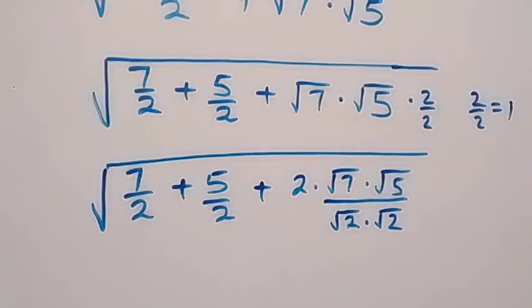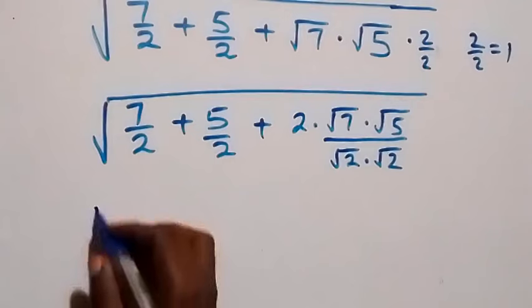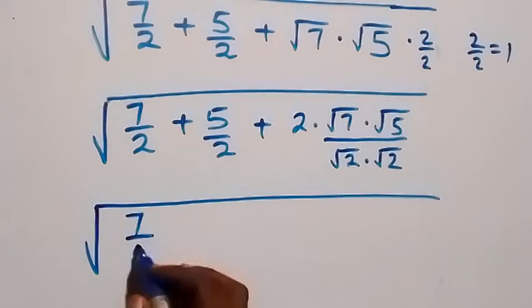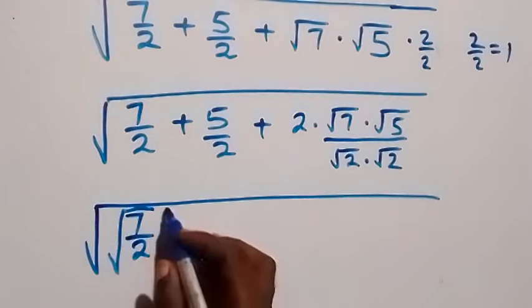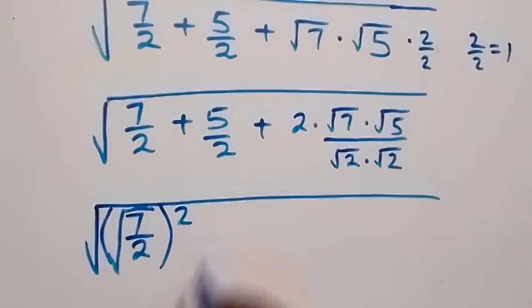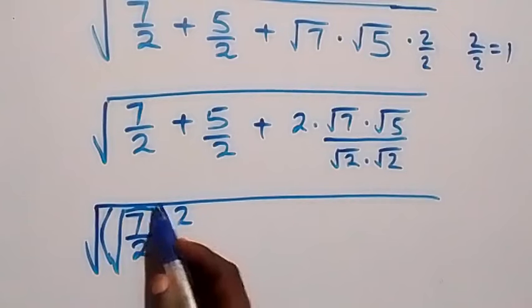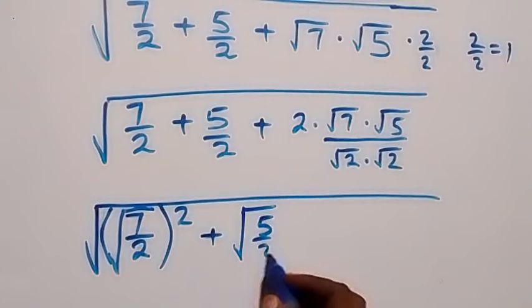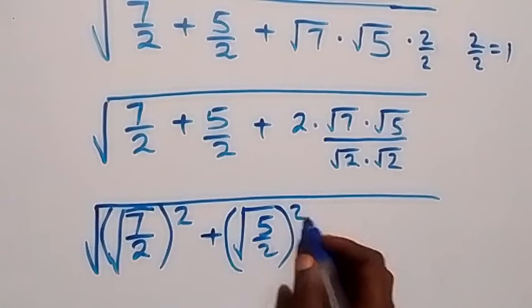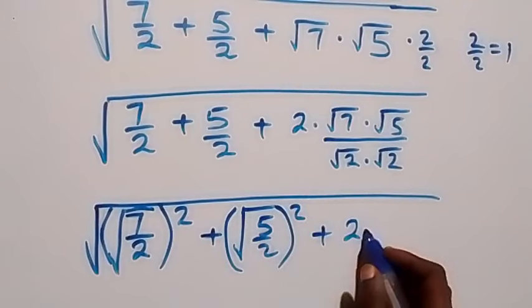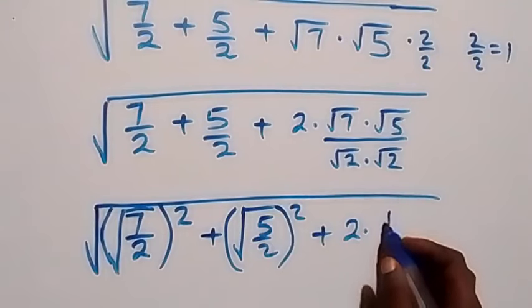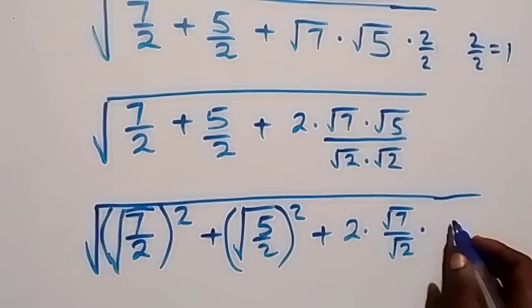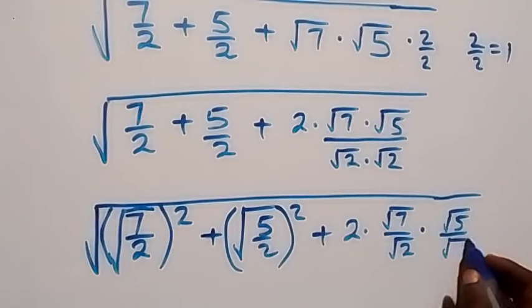Then in the next step we can rewrite this as square root of 7 over 2 — we can write it as root 7 over 2 all squared, because the square cancels the square root. Then plus here, we also cancel, then we have 2 times root 7 over root 2, times root 5 over root 2.